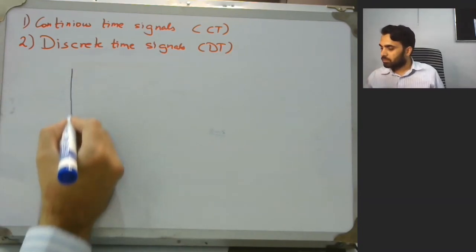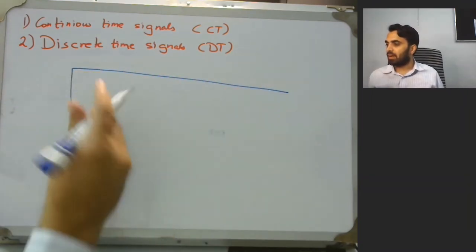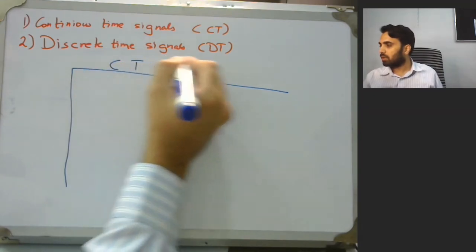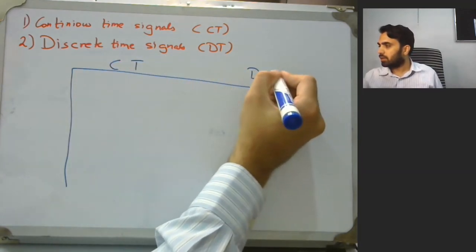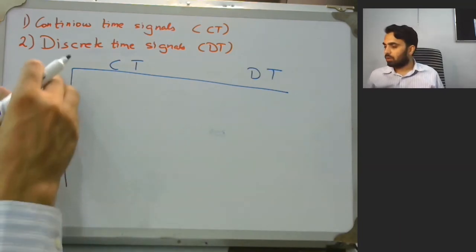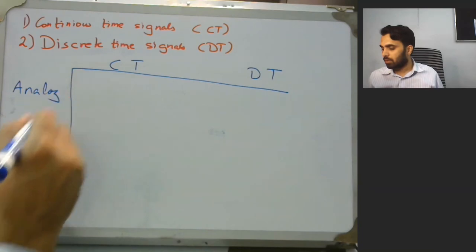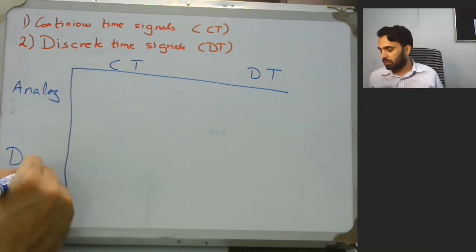We can have a matrix, and on the columns we can have continuous time and discrete time. Moreover on the rows we could have analog and then we could have digital.